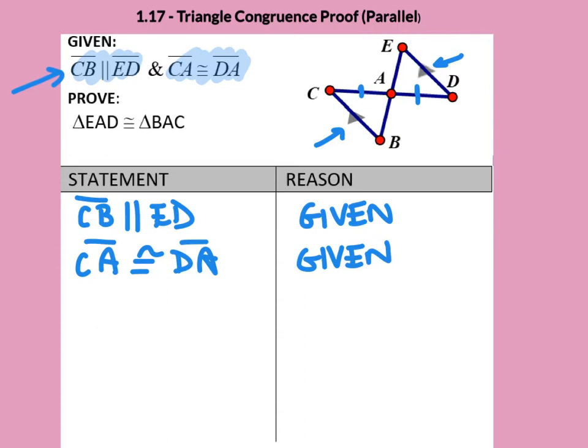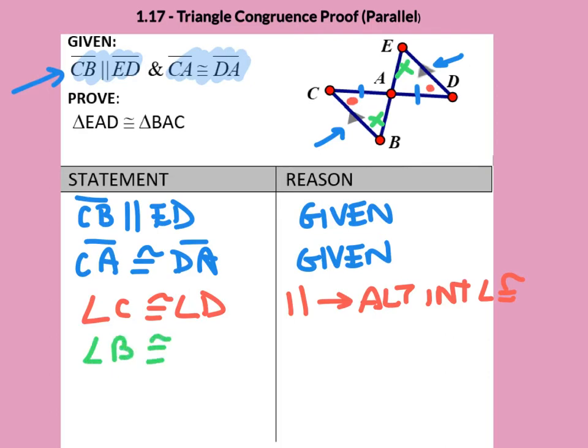Parallel lines imply angles. There are some angles we would know. Angle C and angle D are congruent because parallel lines give us alternate interior angles. It's also true that these alternate interiors would be equal. So angle B is congruent to angle E because the parallel lines tell us alternate interior angles are congruent.